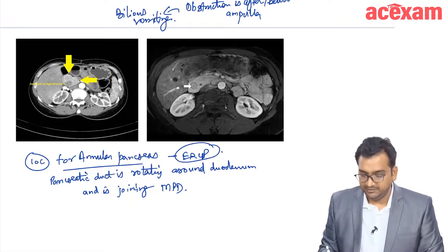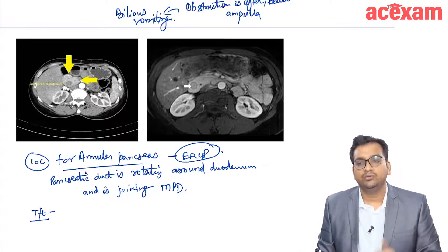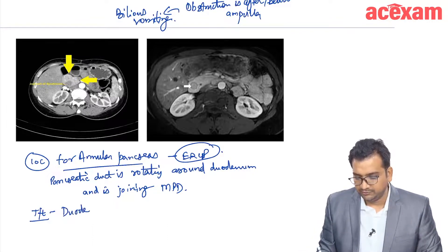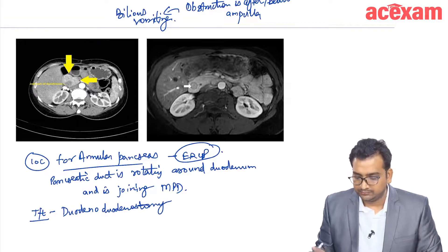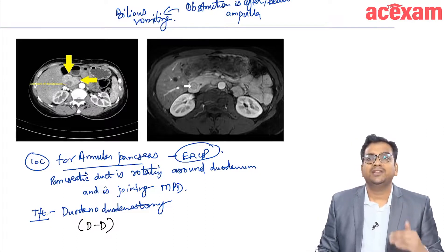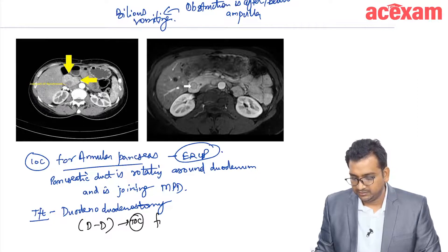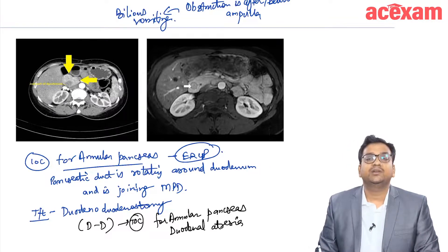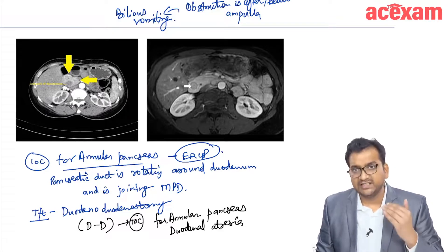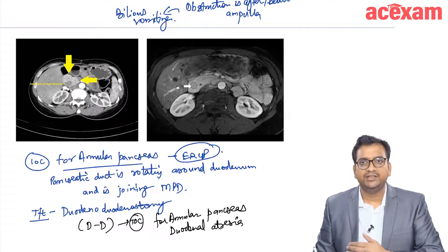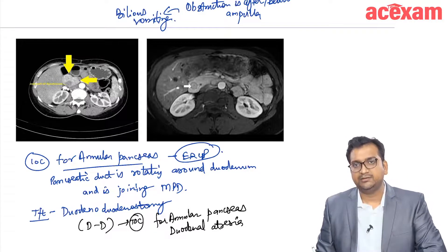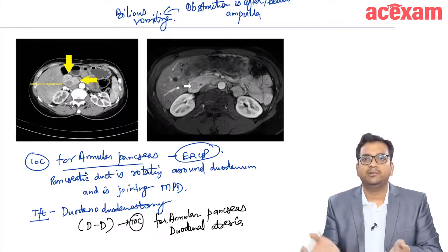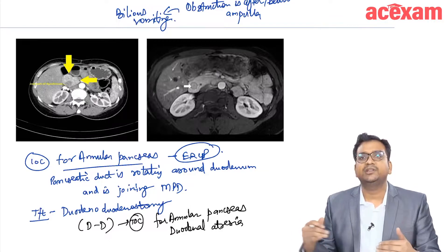The treatment of choice for annular pancreas is duodeno-duodenostomy. However, duodeno-duodenostomy is very difficult because of the hepatic flexion here — it is very difficult to anastomose. And the treatment of choice in that case — for SMA syndrome — is duodenal jejunostomy.